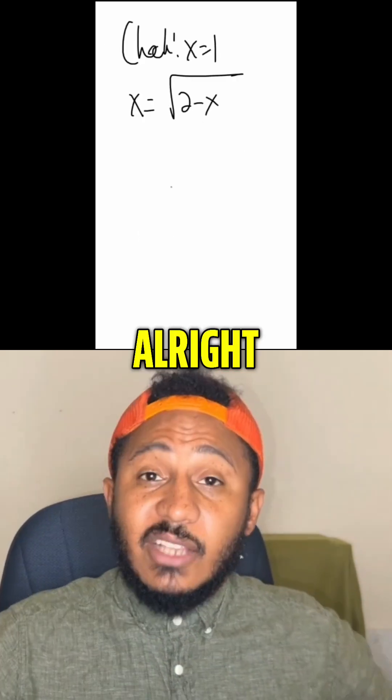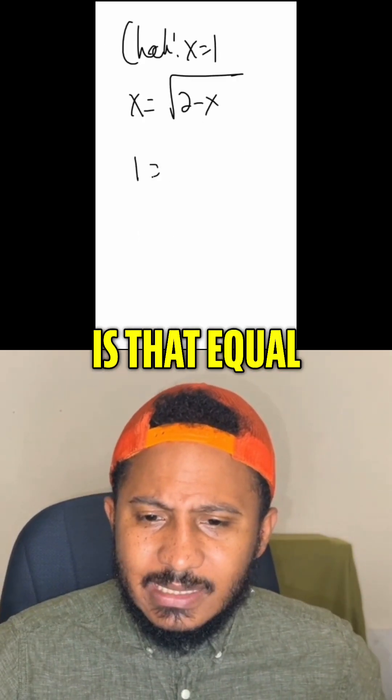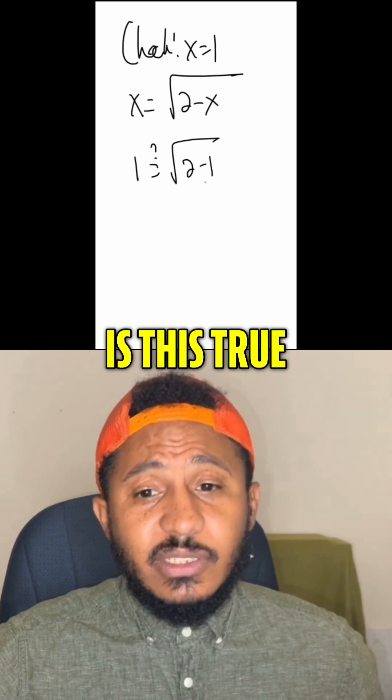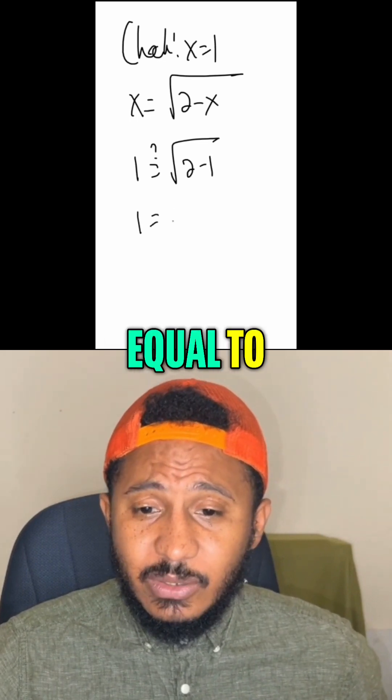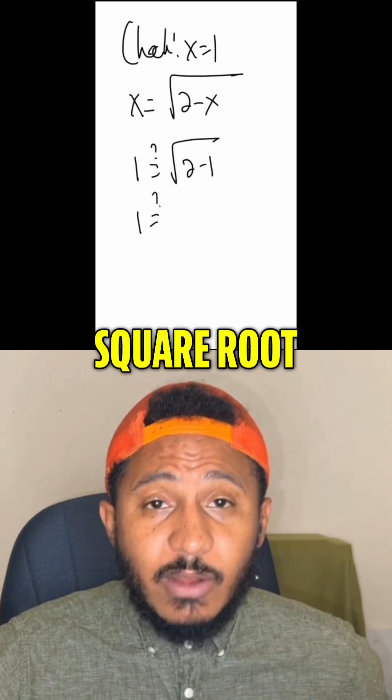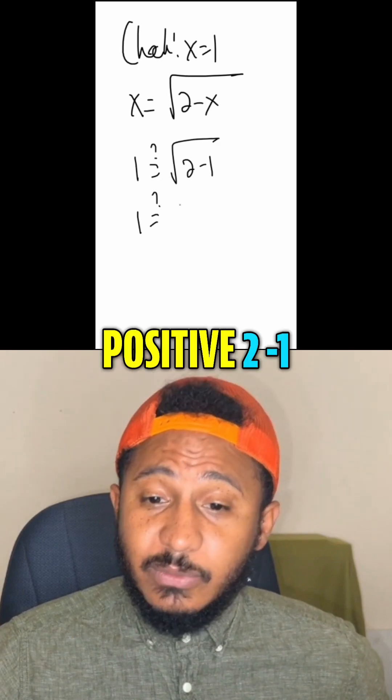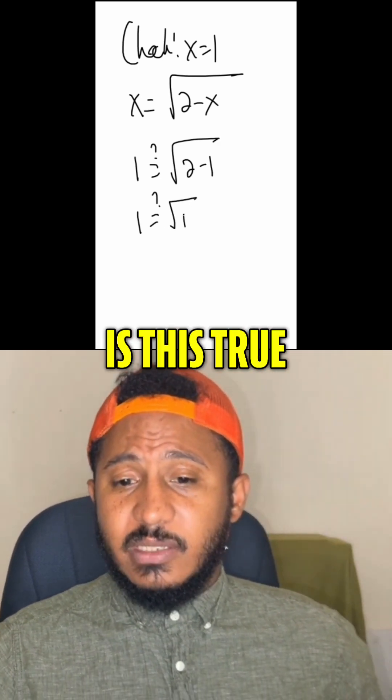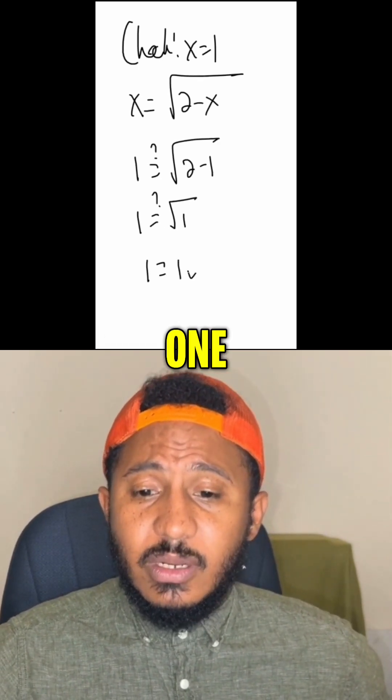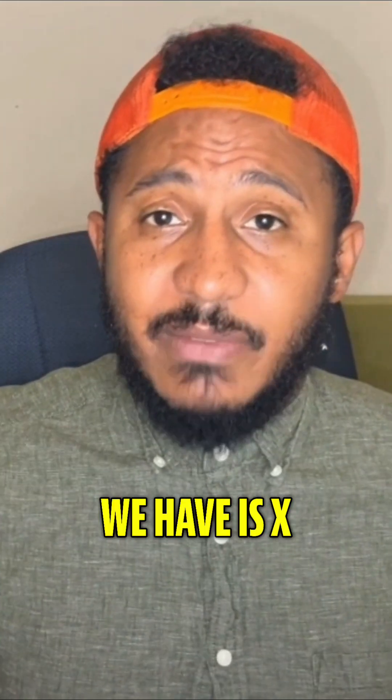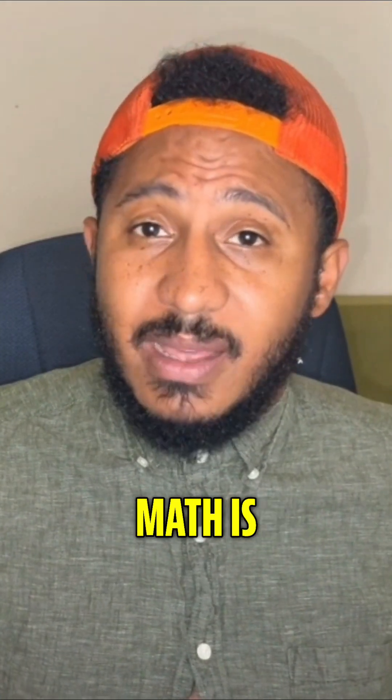All right, let's check 1. So plug in 1, we get 1. Is that equal to the square root of 2 minus 1? Is this true? Well, 1, is that equal to, again, this is a positive square root. So 2 minus 1 is 1. The square root of 1, is this true? Yeah, 1 equals 1. So this one checks out. So the only solution here we have is x equals 1. So always remember math is everywhere.